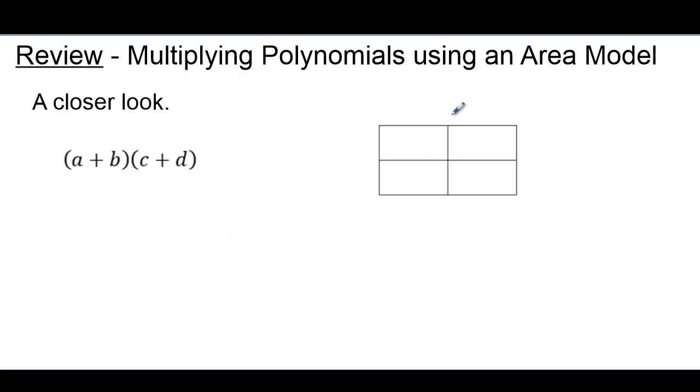Now I want to take a closer look at how this area model works. And so I'm going to look at two more binomial factors with terms and dimensions, A, B, and dimensions along the side, the terms C, D. And now I'm going to multiply the dimensions to get the areas inside. Multiplication is commutative, so I could write BC or CB, and I'm going to choose to put them in alphabetical order.